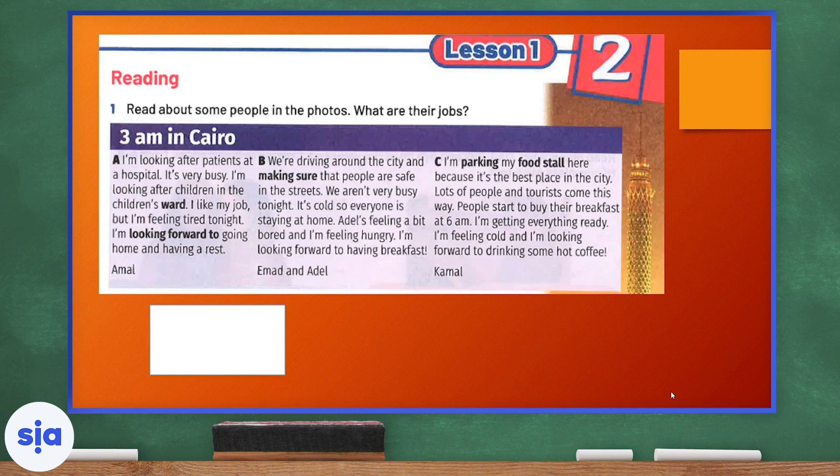Now, I want you to read about some people in the photos. What are their jobs? 3 a.m. in Cairo. A. I'm looking after patients at a hospital. It's very busy. I'm looking after children in the children's ward. I like my job, but I'm feeling tired tonight. I'm looking forward to going home and having a rest. This was stated by Amal. Think about the job at the hospital. Who works the night job?